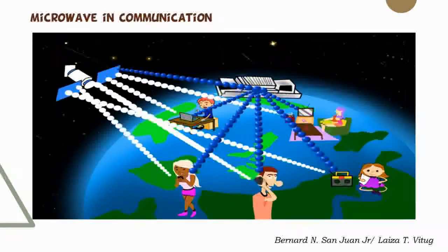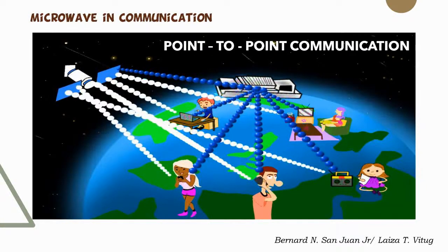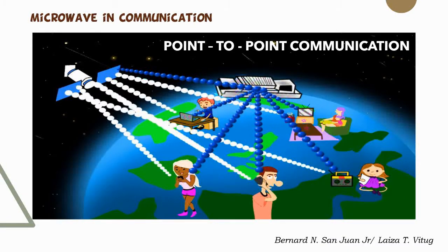Let us now discuss microwave use in communication. Certain electromagnetic waves in the form of microwaves are transmitted to different specific devices — this is what we call point-to-point communication. Point-to-point communication makes use of an outer space communication satellite, which helps in the transmission of electromagnetic waves needed by different gadgets in different ranges or locations.